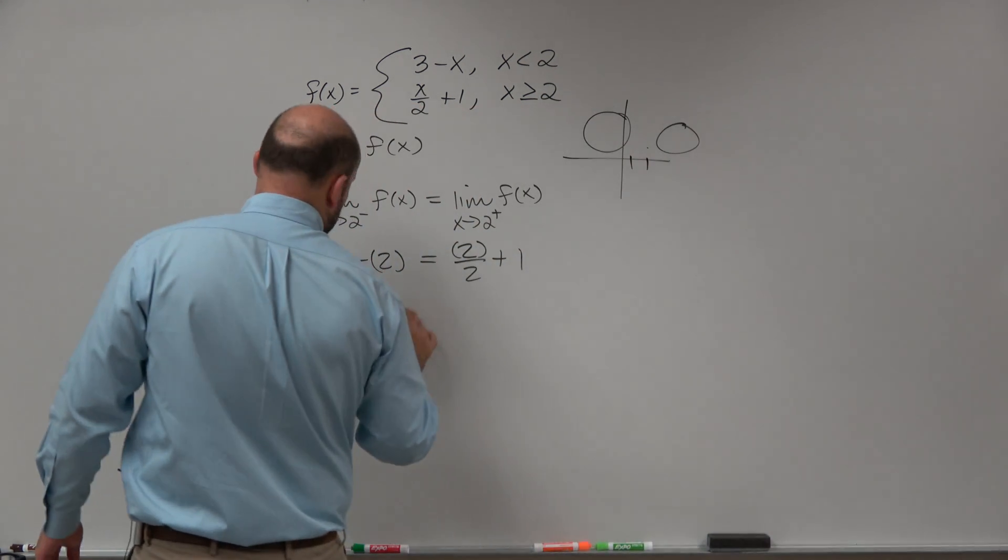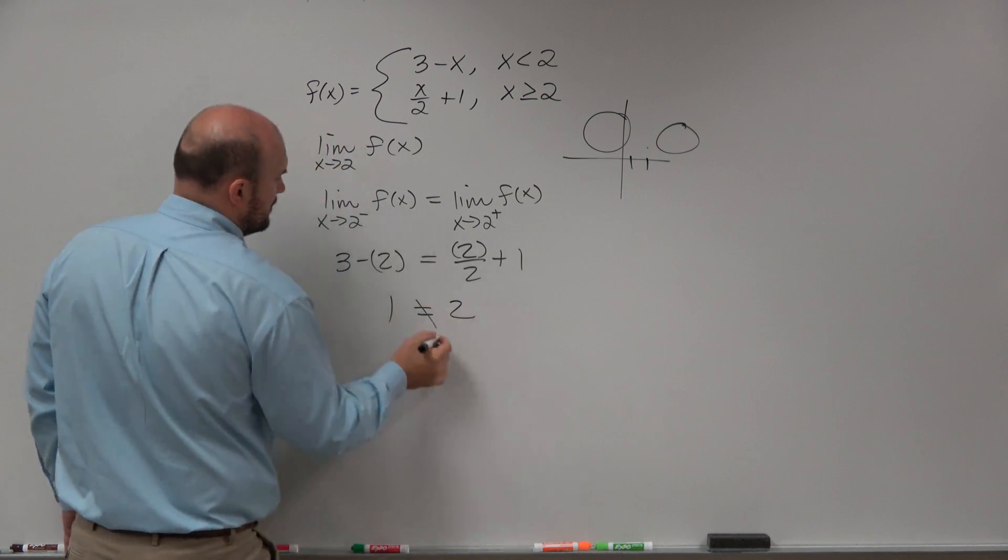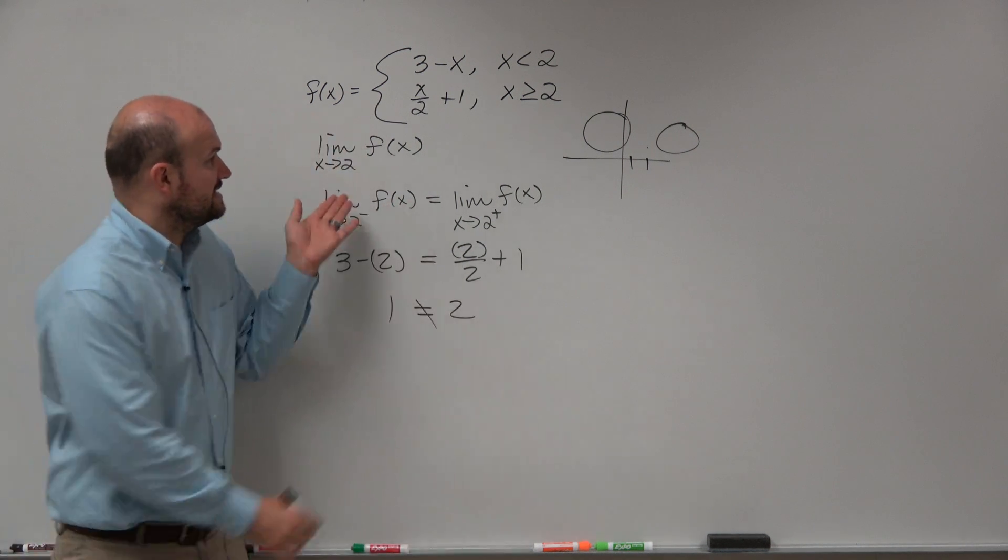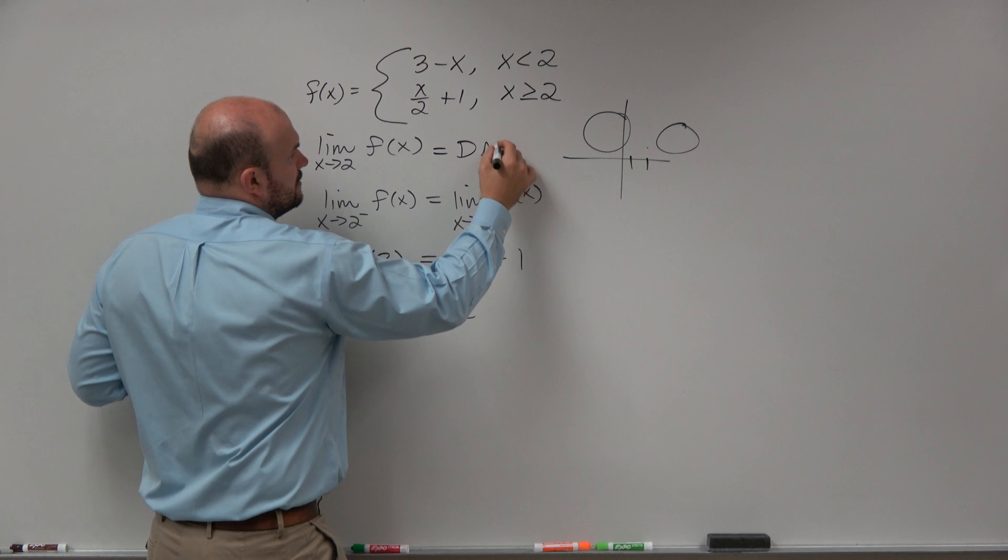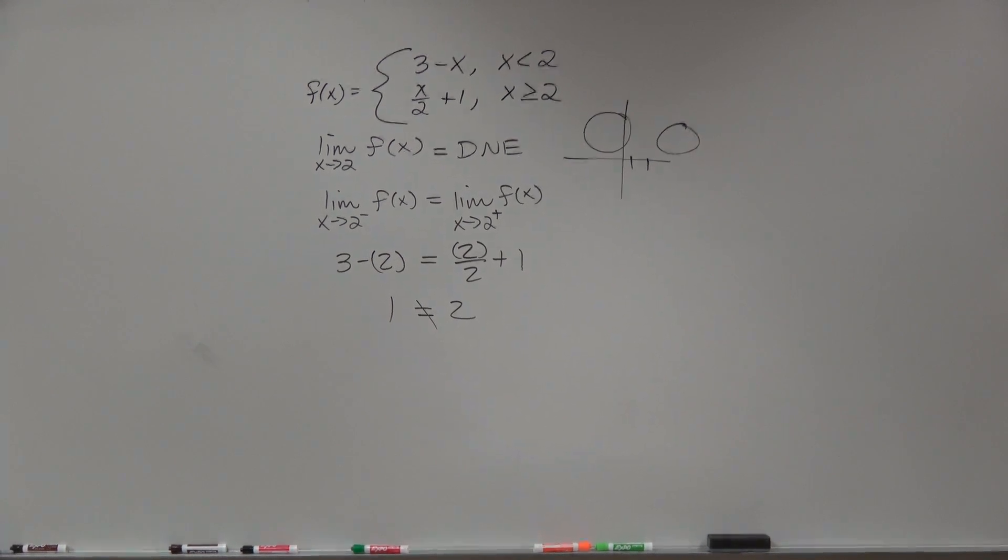And what we see is 3 minus 2 is 1, has to equal 1 plus 1 is 2. They are not equal. So therefore this limit of 2 does not exist, right? Because they'd have to be the same limit approaching from the left and from the right for the limit to exist. And that's it. Let's do this.